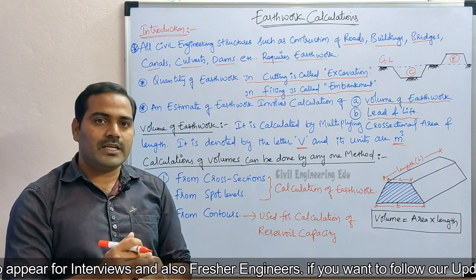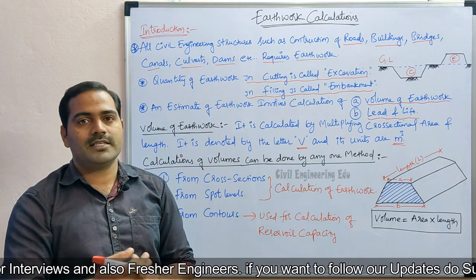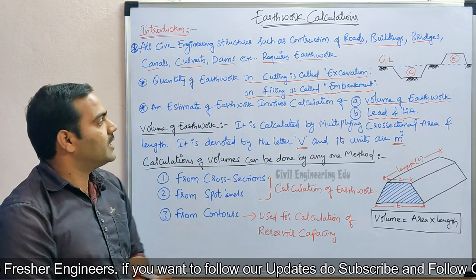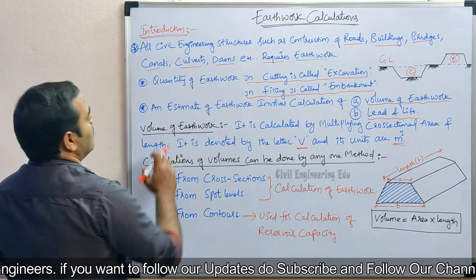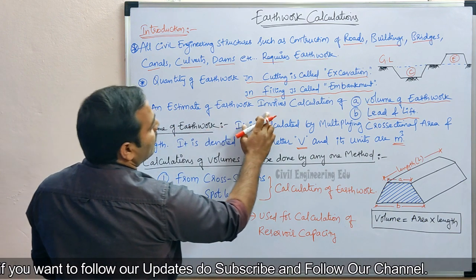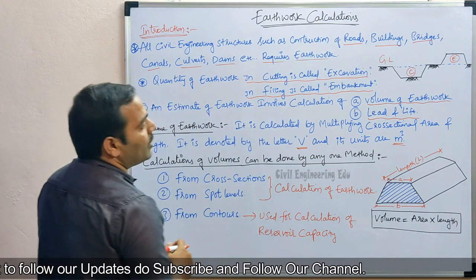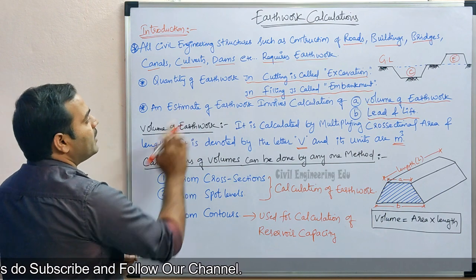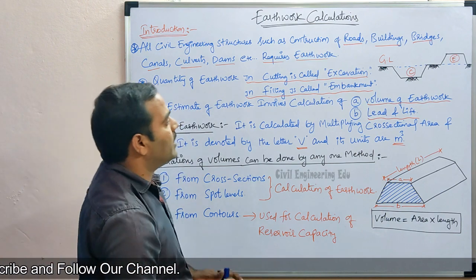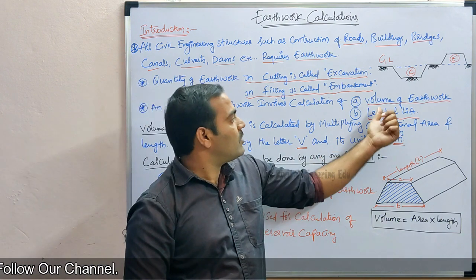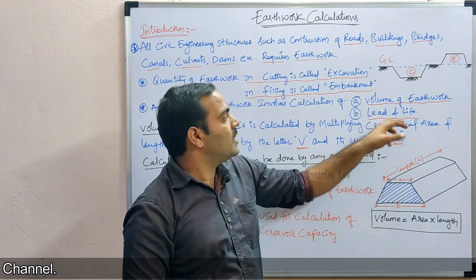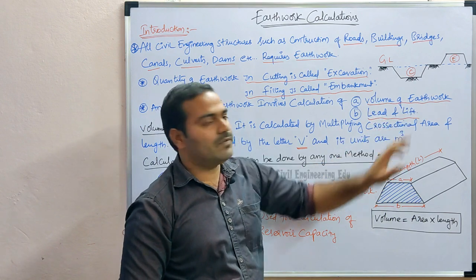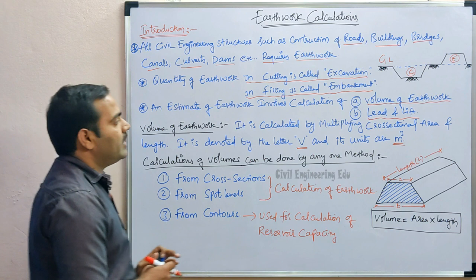To summarize: if the earthwork is done above the ground level we call it embankment; if done below the ground level we call it cutting or excavation. An estimate of earthwork involves the calculation of volume of earthwork, and lead and lift — these two important terms must be understood properly.